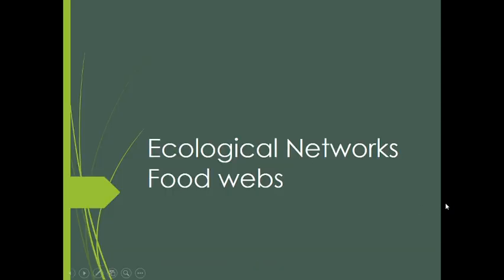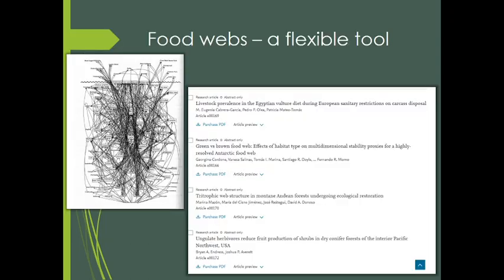We're going to be talking about ecological networks. For the purposes of this course, we're mostly going to be talking about food webs, though there are other types of ecological networks you can explore in your textbook. When we think about food webs, people often think of a picture with a bunch of different species eating other species, but there are really all sorts of ways to think about food webs — they're a very flexible tool.